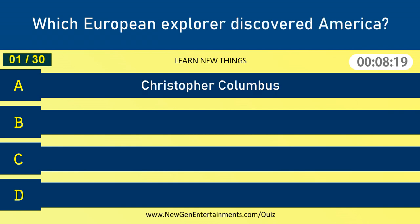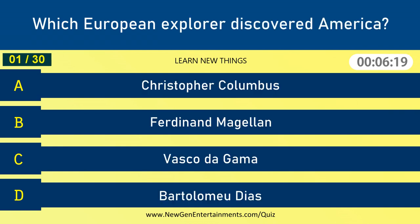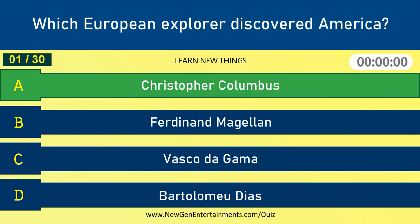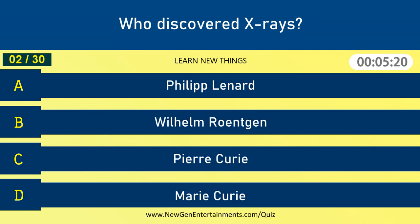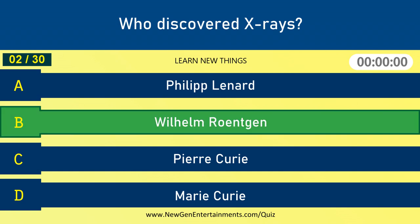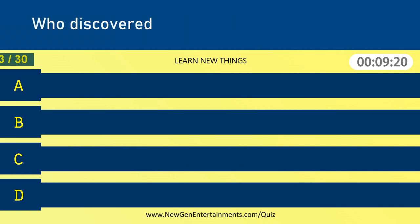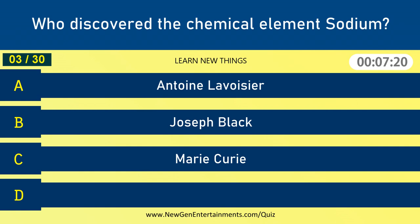Which European explorer discovered America? Christopher Columbus. Who discovered X-rays? Wilhelm Röntgen. Who discovered the chemical element Sodium?